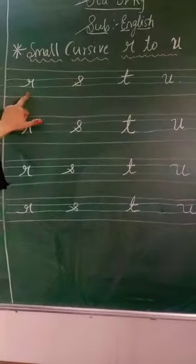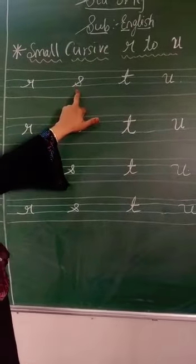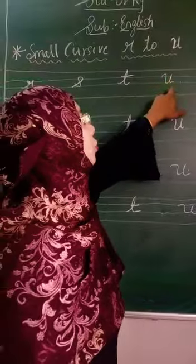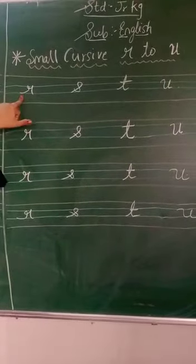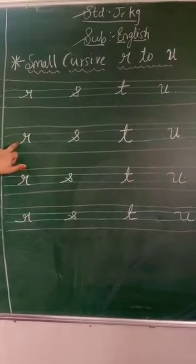R for rabbit. S for sun. T for tomato. U for umbrella. You have to write this properly. Okay? From blue line to blue line.